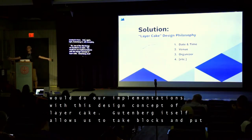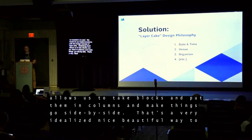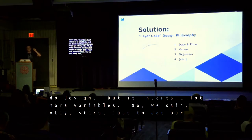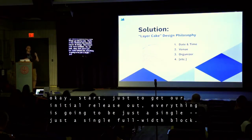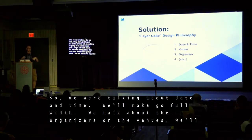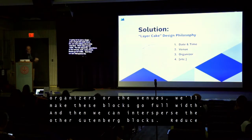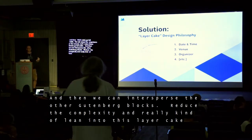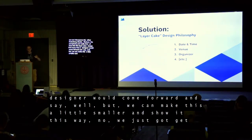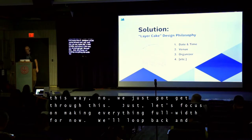Gutenberg itself allows us to take blocks and put them in columns and make things go side by side. That's a beautiful way to do design, but it inserts a lot more variables. So we said, to start, just to get our initial release out, everything is going to be just a single full-width block. When we're talking about date and time, we'll make it go the full width. When we talk about organizers or venues, we'll make these blocks go full width. Then we can intersperse the other Gutenberg blocks, reduce the complexity, and really lean into this layer cake design. And every time a designer would come forward and say we can make this a little smaller, we'd say no — just gotta get through this. Let's focus on making everything full width for now. We'll loop back and address that later.